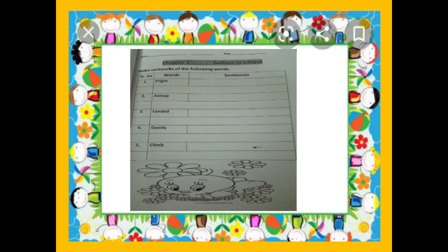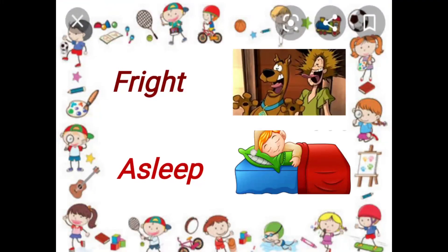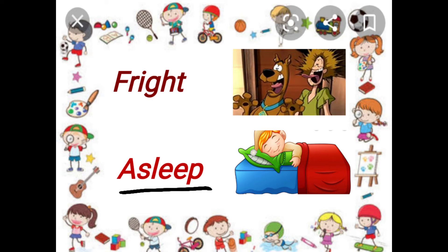The words are: number one, fright; number two, asleep; number three, landed; number four, gently; number five, climb. Now let's see some images. In this video lecture you can see the image. The first word is fright. For fright, you can make sentences like: 'A loud thunder gave me a fright.' And: 'He was shaking with fright.' In the image you can see he was shaking with fright. Also: 'The crowd scattered in fright.'